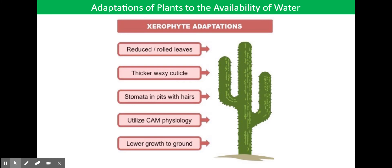Other xerophytic features include closing the stomata when water availability is low, which will reduce water loss and so reduce the need to take up water. Some plants have a low water potential inside their leaf cells, achieved by maintaining a high salt concentration in the cells. The low water potential reduces the evaporation of water from the cell surfaces as the water potential gradient between the cells and the leaf air spaces is reduced. A very long tap root that can reach water deep underground is another feature of xerophytes.